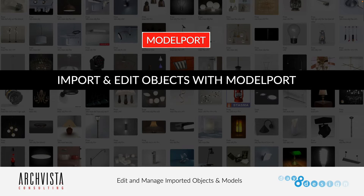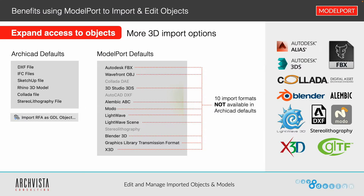Let's jump into how to import and edit objects with ModelPort. Starting with the defaults: on the left are ArchiCAD's defaults for importing objects — DXF, IFC, SketchUp, Rhino, Collada DAE, stereolithography, RFA, and IFC. On the right, you can see there are many additional defaults in ModelPort that aren't available within ArchiCAD's standards — 10 additional import formats in addition to all the other advantages we'll talk about today.